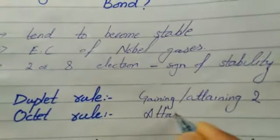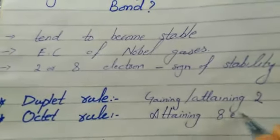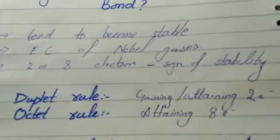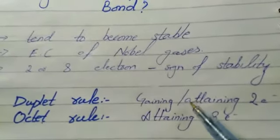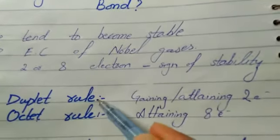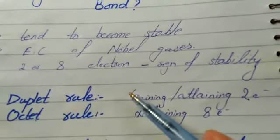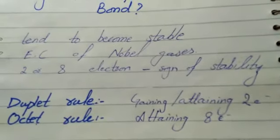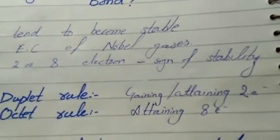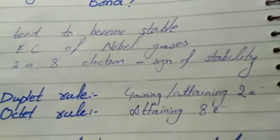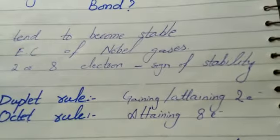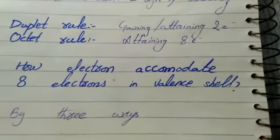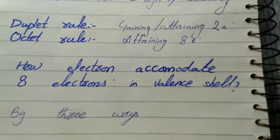The attaining of 8 electrons in the outer shell is known as the octet rule. When we try to complete 8 electrons in the outer shell, we call it the octet rule. The 8 electrons in the outer shell can be completed by 3 ways.